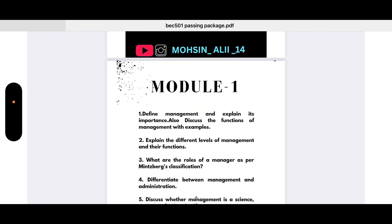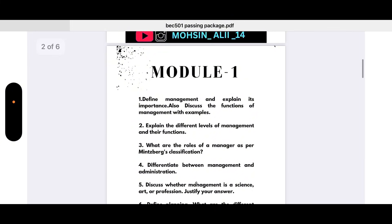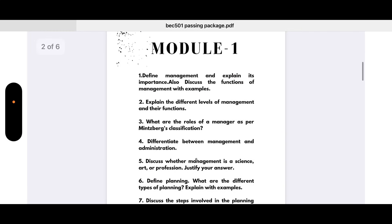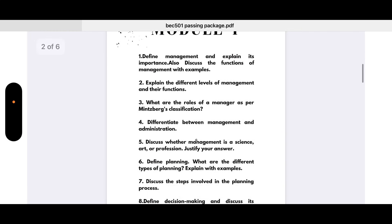Module 1 important questions — these are 10-mark questions: Define management and explain its importance; discuss the functions of management with examples. Explain the different levels of management and their functions. What are the roles of a manager as per Mintzberg's classification? Differentiate between management and administration. Discuss whether management is a science, art, or a profession — this is a super important question asked most of the time.